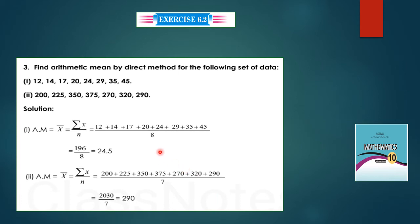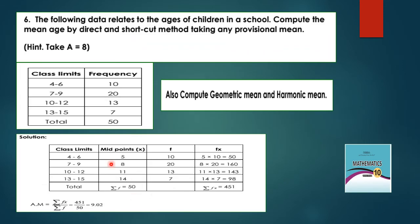Exercise: find the arithmetic mean by direct method for the data: 12, 14, 17, 20, 24, 29, 35, 45. Sum divided by 8 total values — the total is 196 divided by 8 equals 24.5. Second part: x-bar equals summation x divided by n. Sum of all data is 2030 divided by 7 equals 208.